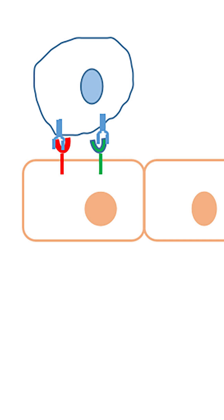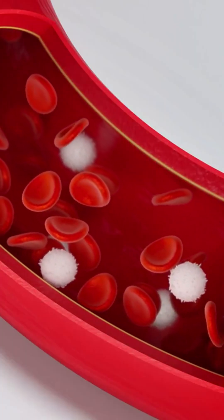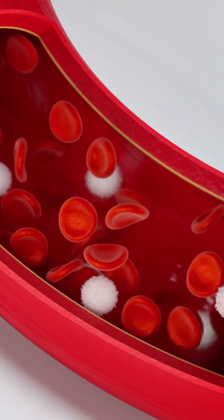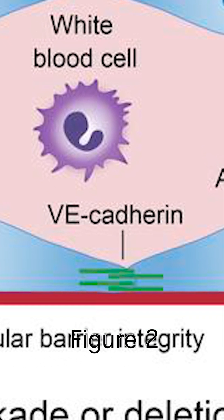Now for the real infiltration. The immune cell sends commands that tell the vessel lining—the endothelium—to loosen its grip. Proteins like VE-cadherin unzip the junctions, opening a microscopic door.